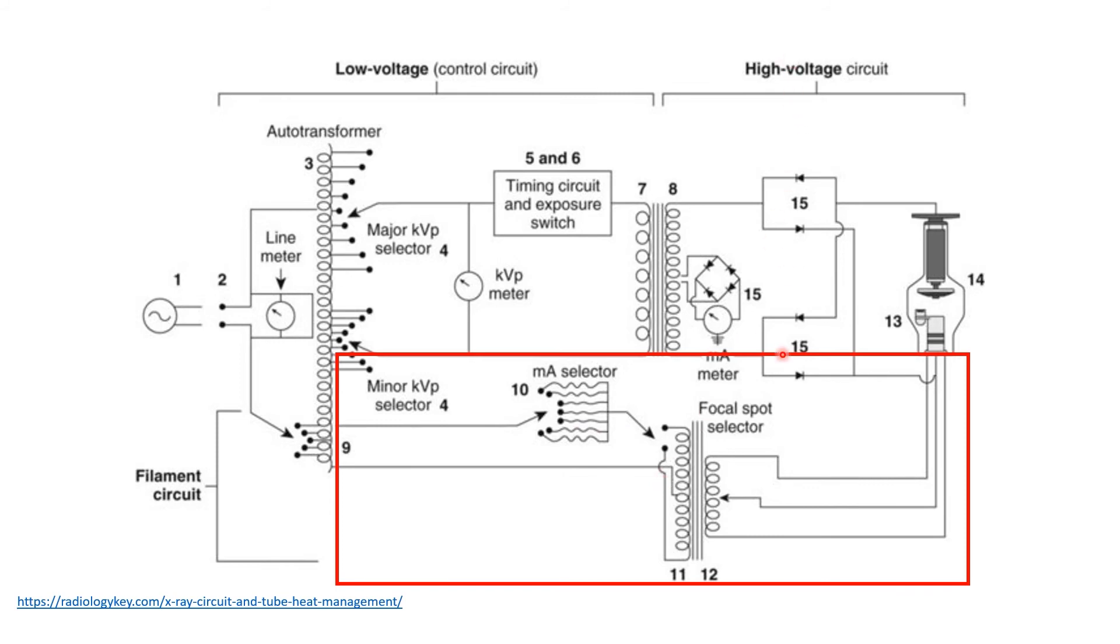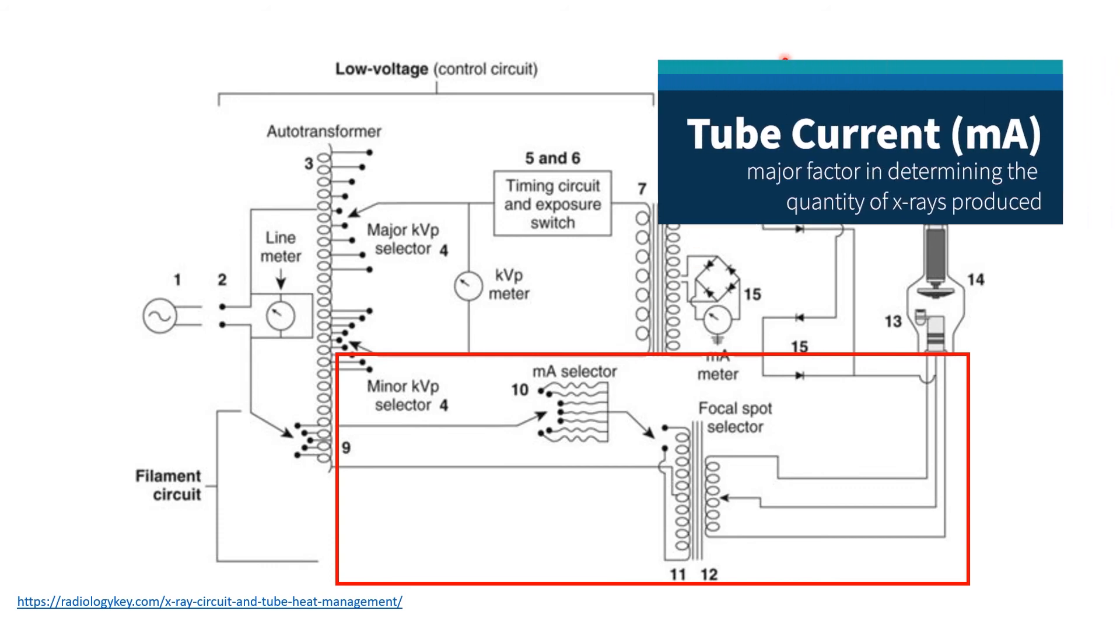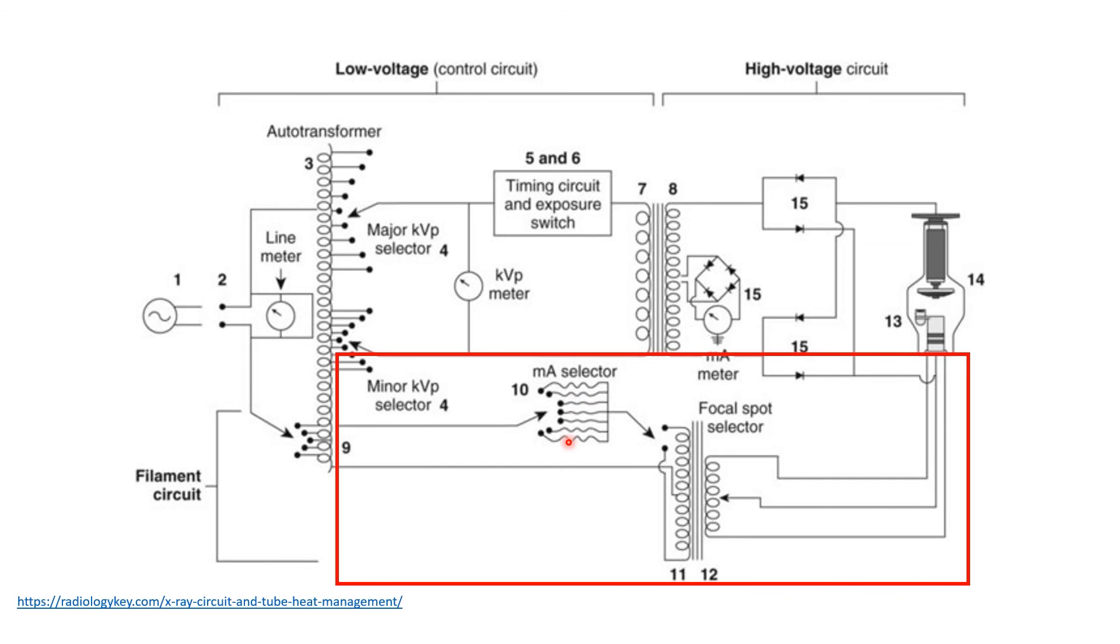Then, the secondary side of the step-down transformer conducts the low current through the X-ray tube filament. This is done by the step-down transformer through the reduction of the voltage on the secondary side, giving an appropriate low current to heat the filament. The MA selector controls the heat filament and this setting determines the number of available electrons at the X-ray tube filament. Thus, determines the MA in the high voltage circuit that includes the X-ray tube.